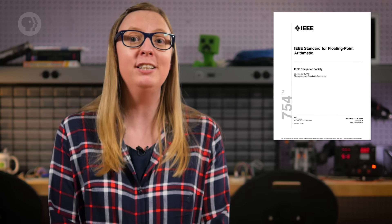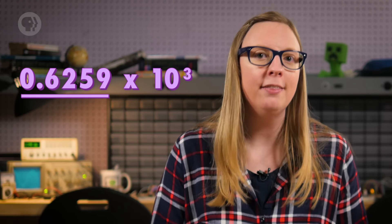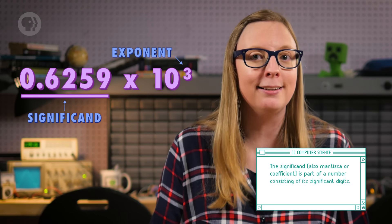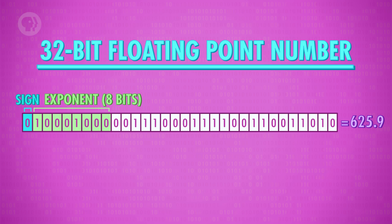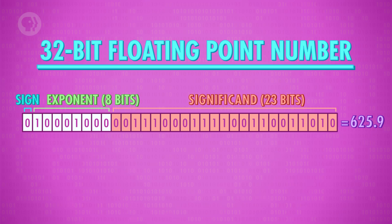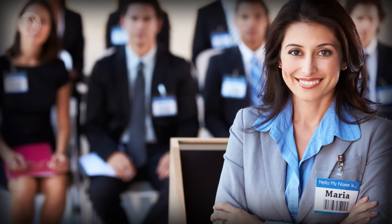In addition to negative and positive numbers, computers must deal with numbers that are not whole numbers, like 12.7, 3.14, or even stardate 43989.1. These are called floating-point numbers, because the decimal point can float around in the middle of a number. The most common standard is IEEE 754. In essence, it stores decimal values like scientific notation — for example, 625.9 can be written as 0.6259 times 10 to the power of 3. In a 32-bit floating-point number, the first bit is used for the sign, the next 8 bits store the exponent, and the remaining 23 bits store the significand.